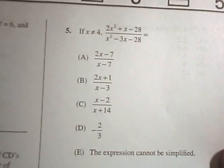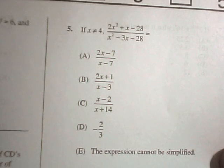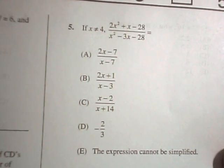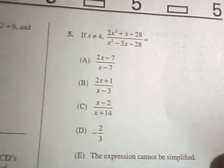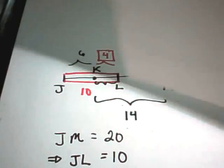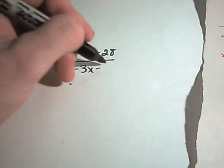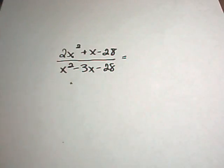Okay, so in number 5, it says, let's see if I can get it all in here. It says, for x not equal to 4, and that's just because I assume it makes the denominator 0. We have 2x squared plus x minus 28 over x squared minus 3x minus 28, and we want to simplify that thing down a little bit. So, in this case, what we'll basically just try to do is factor the top and factor the bottom. So, I'm going to do this on a different piece of paper here.